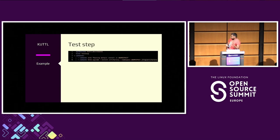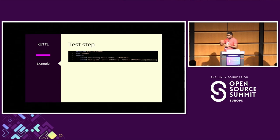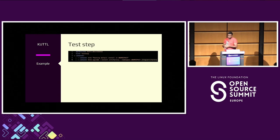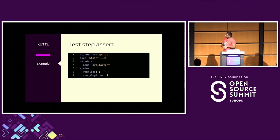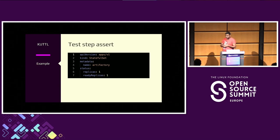Next is a test step. A test suite is a collection of test steps. API version is kuttle.dev/v1beta1 and kind is 'TestStep', where you can use commands to launch a shell script you already have. If you have an application normally tested on VMs and want to test it on Kubernetes, you can still use your existing scripts without modifying anything. Next is an assertion — say I'm deploying JFrog Artifactory open source, and I'm asserting the number of ready replicas post-install. It's a declarative way of testing the application.